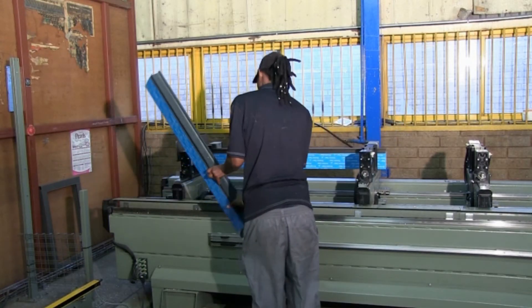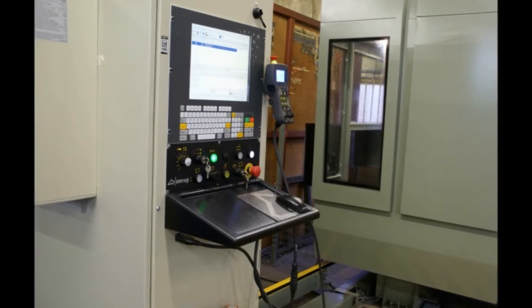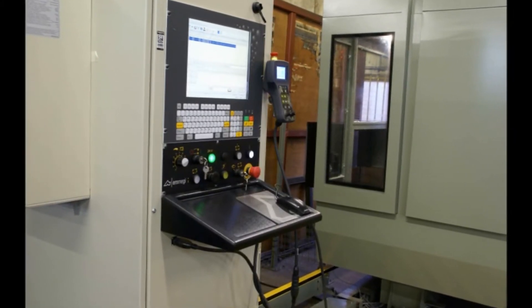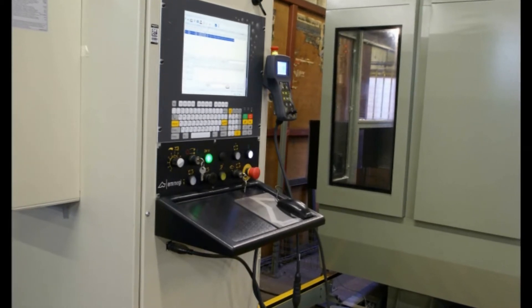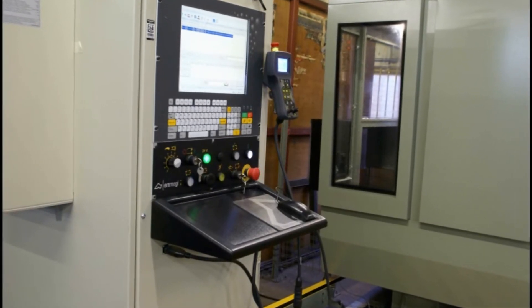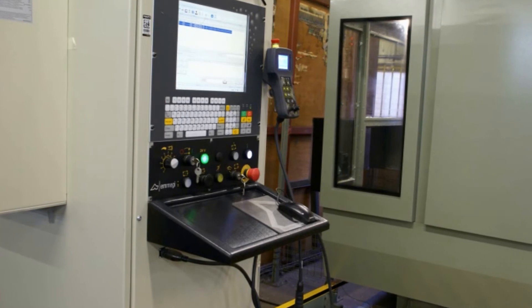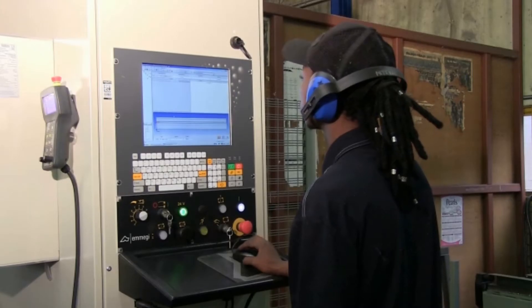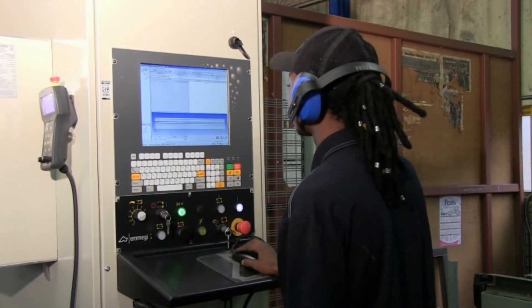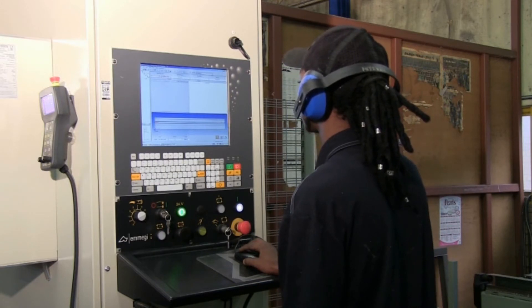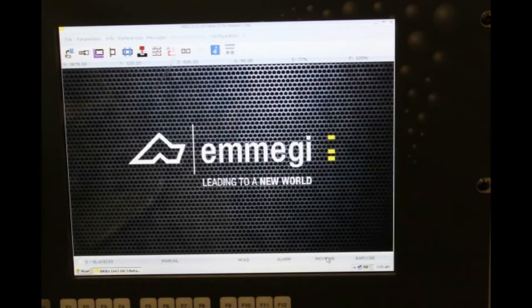The operator interface comprises of a 15 inch LCD display as well as a keyboard and USB port for data exchange. The machine is quick and easy to program thanks to the intuitive campus software developed by Emergy and customized for the machining centers.